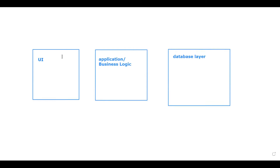The UI layer is where you can see things. For example, if you open any website, whatever is visible to you is called the UI layer — developed in HTML or similar languages. The database layer is where data is actually stored. For example, on a housing website, all house listings are stored in the database, and the UI is there to display them.